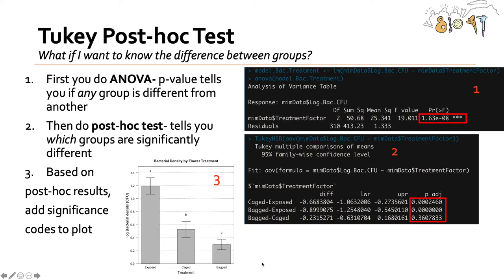We can use different letters — A, B, B in this case — above the groups to represent which groups are different. Groups that are significantly different as determined by the post hoc test will have different letters above them. So EXPOSE has A and CAGE has B, meaning EXPOSE and CAGE are significantly different. EXPOSE and BAG also have different letters A and B, so BAG and EXPOSE are significantly different. But CAGE and BAG have the same letter, meaning they are not significantly different, as you can also see from the P value. These letters on top of the groups provide more intuitive information than a table of values.